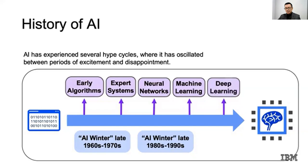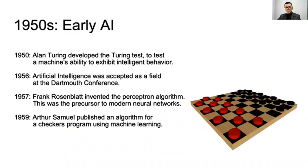By the implementation of machine learning in the 2000s, again investments and interest in Artificial Intelligence started to develop. And that was also the next development path of Artificial Intelligence.